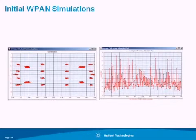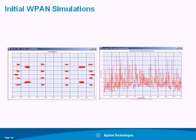We could have also added spectral mask analysis and similar metrics. This was just our first check to make sure we weren't getting gross levels of EVM, and that the constellation wasn't turning into a rat's nest or spiderweb — something that no longer resembled a constellation.